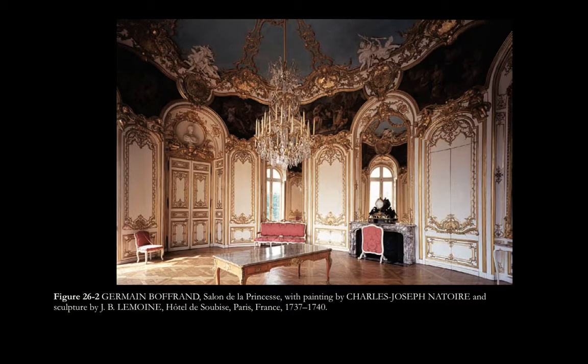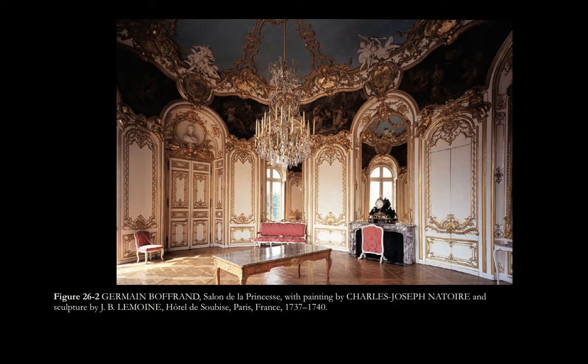Rococo interiors in general are very, very highly ornamented. You can see that prominent featuring of the gold and all of those tiny and very fancy details. The wealthy at this time period would spend a lot of their time just sitting in rooms like this, entertaining their friends, listening to music, which was also very ornate, and eating fancy food. This would have been their whole life, and they would have worn luxurious silk gowns that matched this aesthetic.